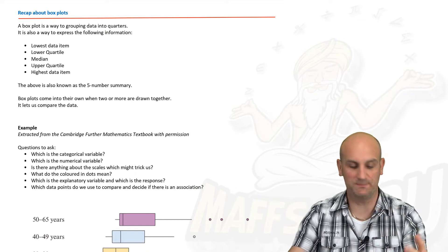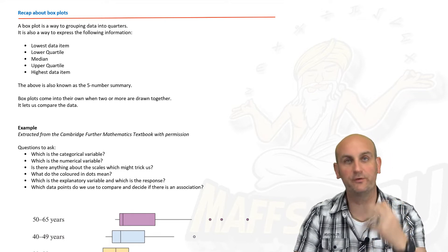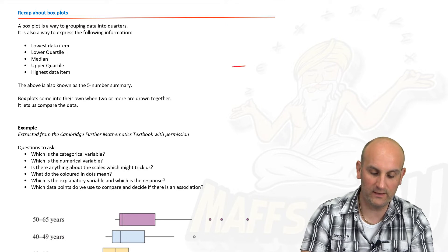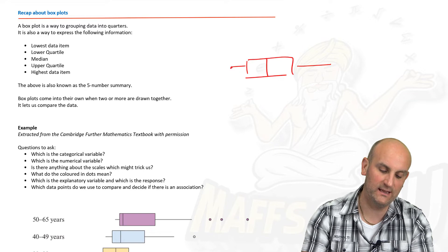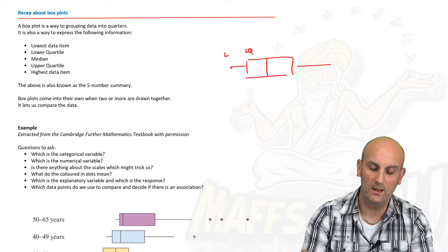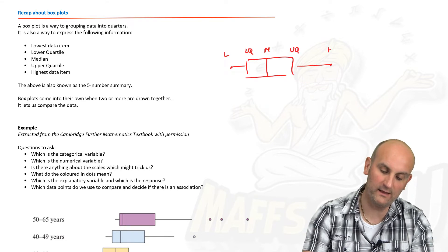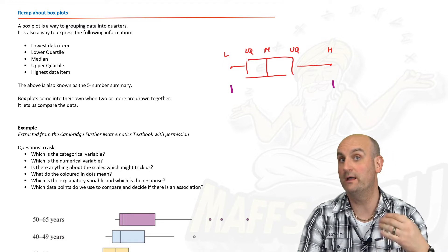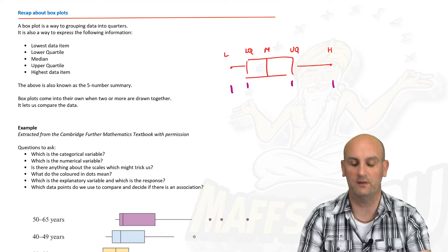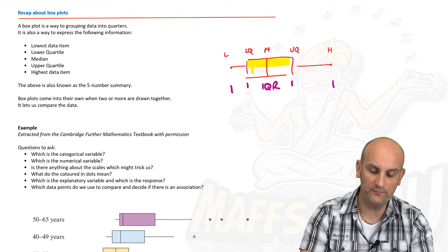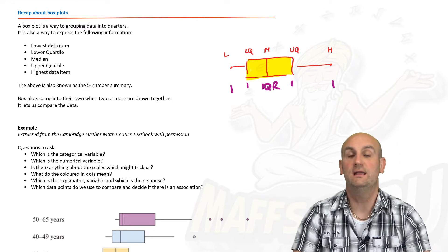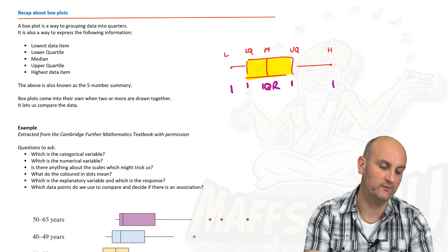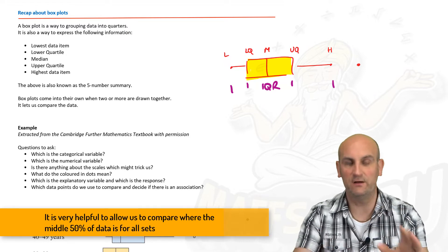In previous years you've talked about box plots. We looked at how box plots put data into quartiles or quarters. In a box plot, we have the lowest data item, the lower quartile, the median, the upper quartile, and the highest value. The difference between the lowest and highest gives the range, and the difference between the lower and upper quartile gives the inter-quartile range — roughly where 50% of our data lies. This doesn't account for outliers, which can make things very interesting with box plots.